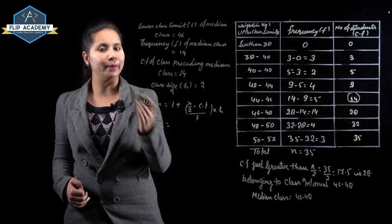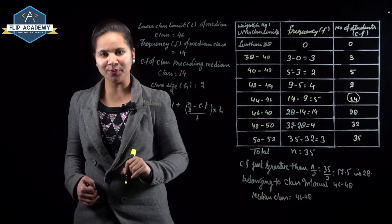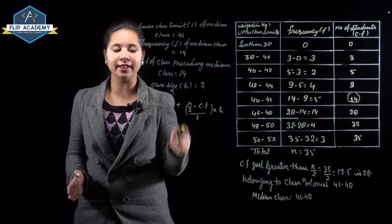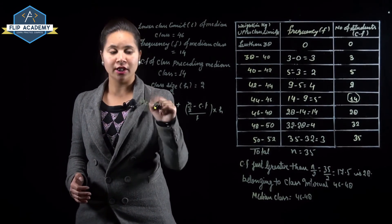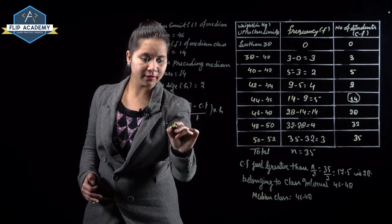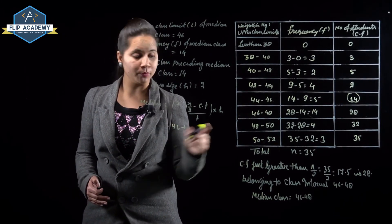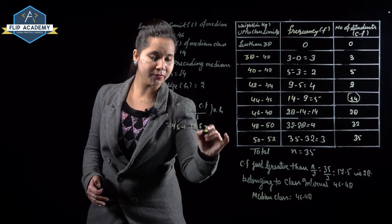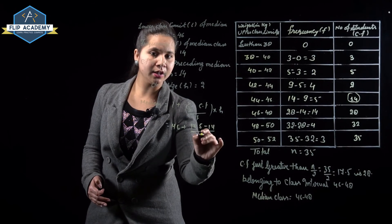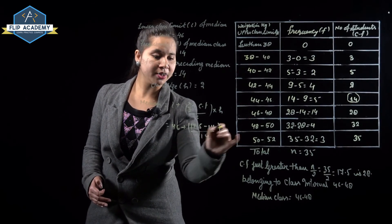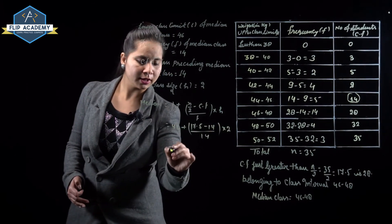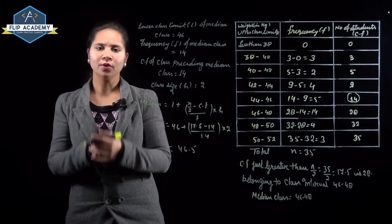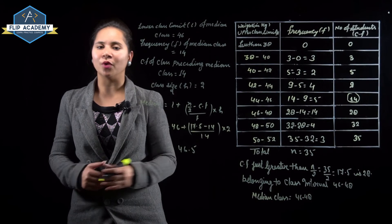Class size h = 48 − 46 = 2. Using the median formula: Median = L + (N/2 − cf) / f × h = 46 + (17.5 − 14) / 14 × 2 = 46 + 3.5/14 × 2 = 46.5. It is verified that the median is 46.5. Q2 is complete.